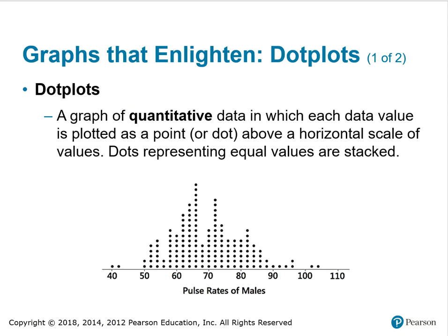The first graph we'll study is a dot plot. Dot plots are graphs of quantitative data in which each data value is plotted as a point or dot above a horizontal scale of values. Dots representing equal values are stacked. Notice that the horizontal scale begins at 40, ends at 110, and counts by 10 in order to fit the data. We also have a label showing that this data is pulse rates of males.